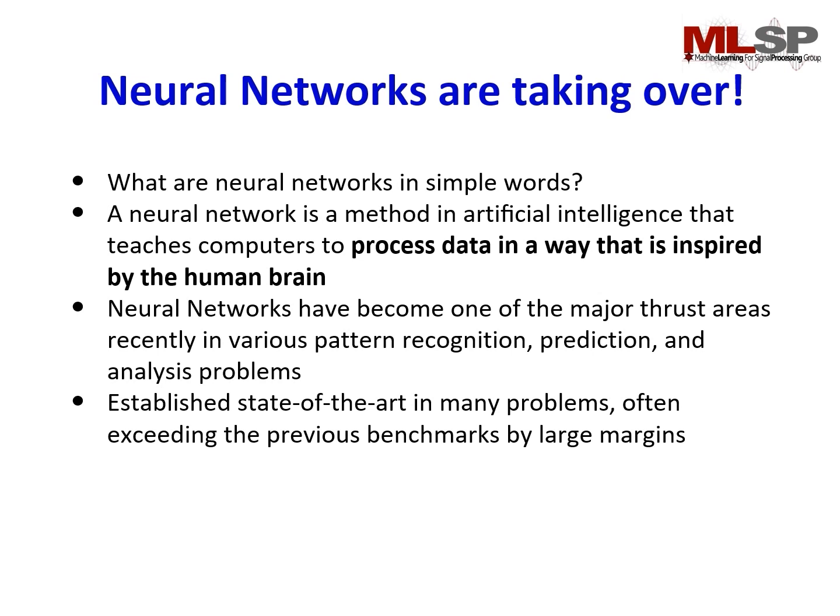So what are neural networks in simple words? A neural network is a method in artificial intelligence that teaches computers to process data in a way that is inspired by the human brain. Neural networks have become one of the major focus areas in recent pattern recognition, predictions, and analysis problems, and they have established state-of-the-art in many problems, often exceeding previous benchmarks by a large margin.